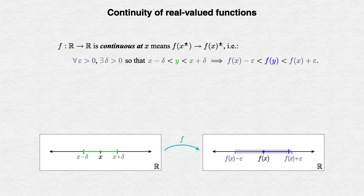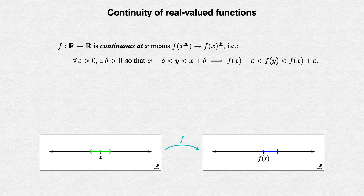Remember that this statement needs to work for all targets we paint in the codomain. But as long as no matter how small we make epsilon there is some delta so that f sends all those points near x inside the target, we have continuity at x. That's the whole definition of continuity at a point.